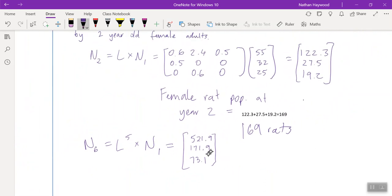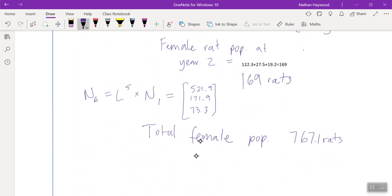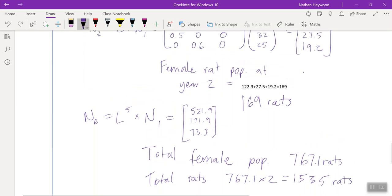So Leslie matrix to the power of five times the original numbers. 73.3. So then we add all those together and you get total female population, 767.1. So then the total would be two times that. So let's round it up, 1,535 rats. So things to keep in mind, you always do the power of one less than the year you're aiming for. And if it asks for total population, you assume the number of males is equal to the number of females. And also round our decimals to a whole.